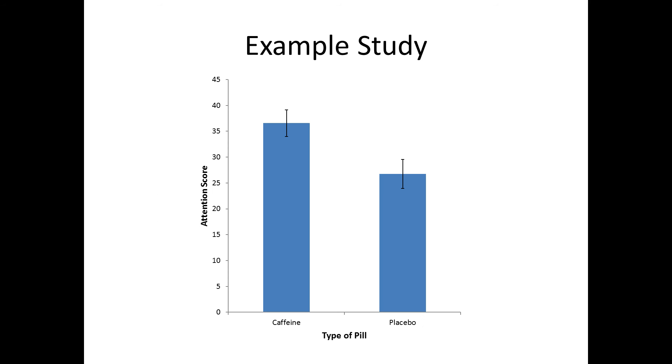And let's say you get this data. So here we have attention score on the y-axis. Here's the data for the caffeine group and here's the data for the placebo group. We see that numerically that people in the caffeine group seem to be scoring much better in terms of attention than people in the placebo group. What the researcher is interested in is whether this difference reflects reality or not. Does caffeine really truly improve attentional performance?